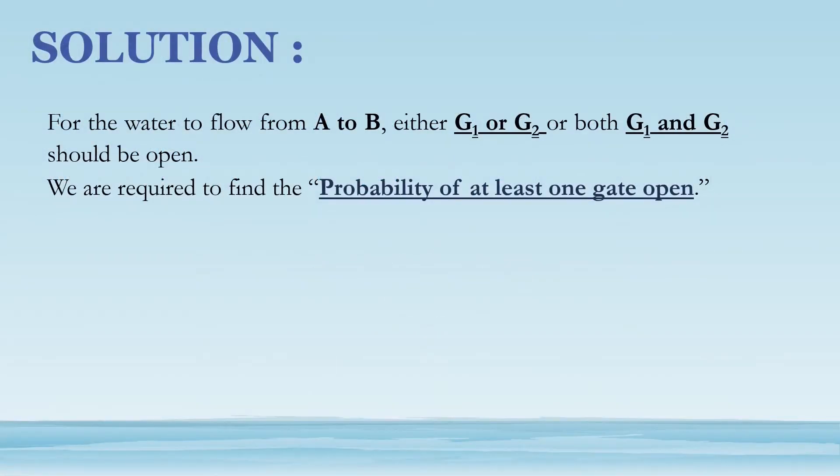Solution: To find the probability that water will flow from A to B. For the water to flow from A to B, either G1 or G2 or both G1 and G2 should be open. We are required to find the probability of at least one gate open.